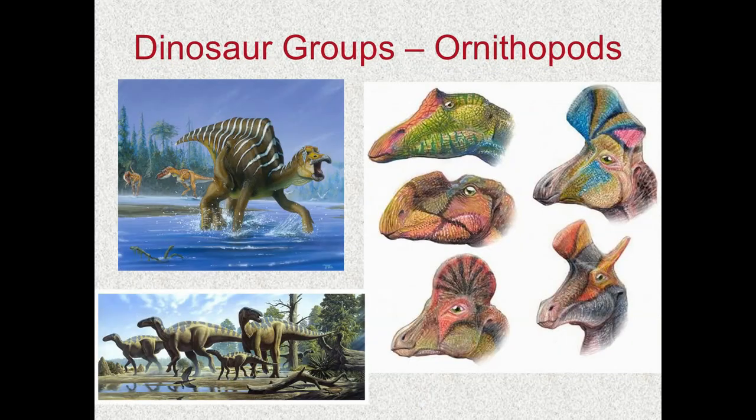We had our ornithopods — our duck-billed dinosaurs. These came in a wide variety of crest sizes and shapes, once again we think used for mating purposes. We also think they could pass air through the crests making some kind of noise to warn others in the herd about nearby predators, or letting them know where food was — some kind of vocalization done by passing air through these crests.